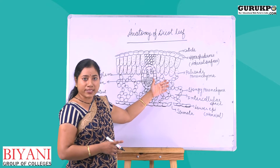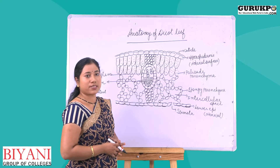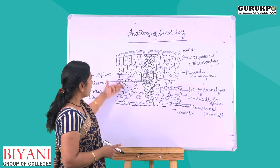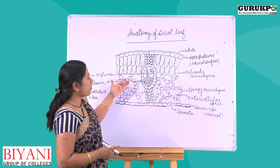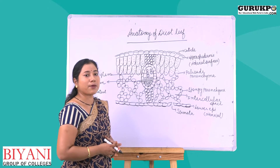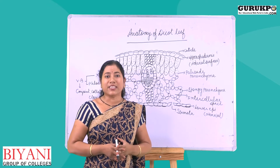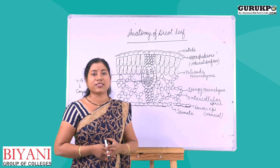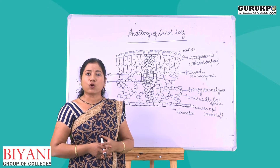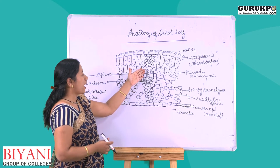Spongy parenchyma has large cells with large intercellular spaces. Next, in between the veins and midribs, vascular bundles are present adjacent to the spongy parenchyma and palisade parenchyma.